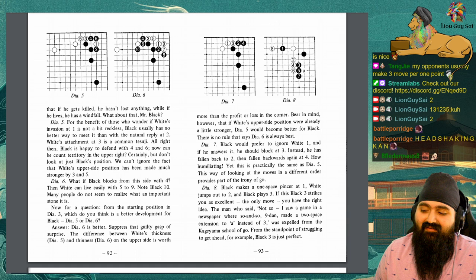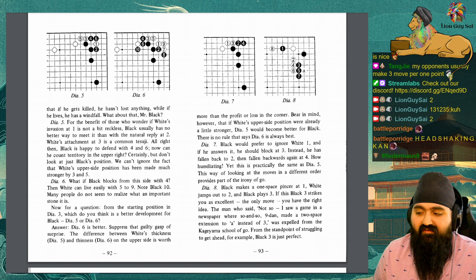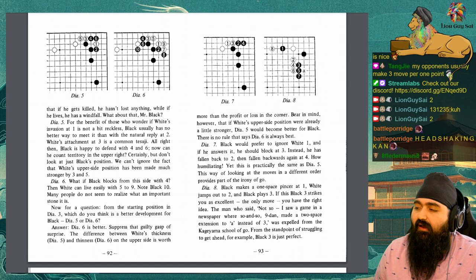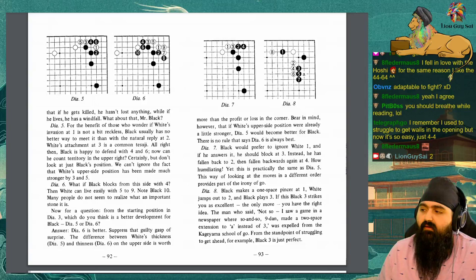Suppress that guilty gasp of surprise. The difference between white's thickness and thinness on the upper side is worth more profit or loss than in the corner. Bear in mind, however, that if white's upper side position were already a little stronger, diagram 5 would be better for black. There is no rule that says diagram 6 is always best.